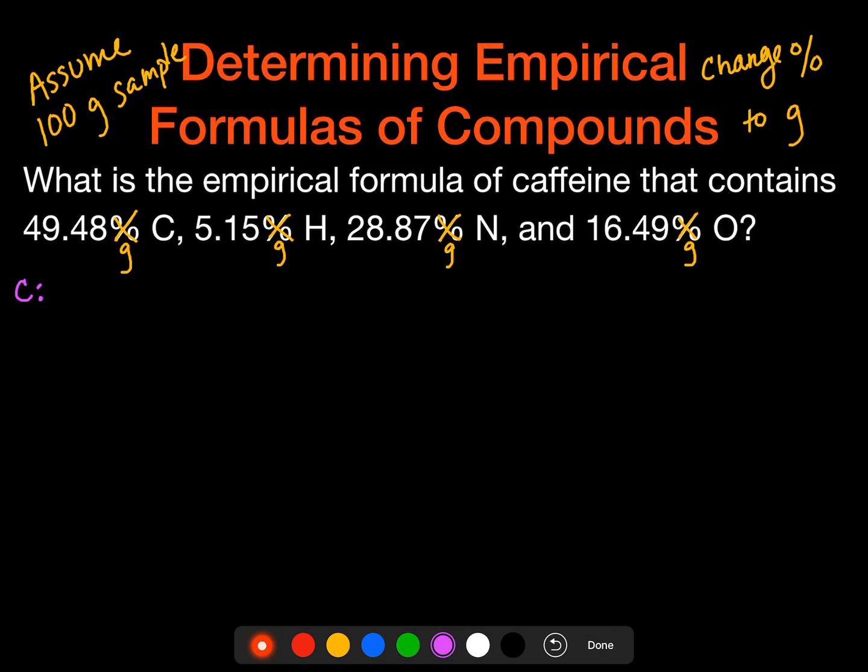So now what I'm going to do is for each one of these, I'm going to start with carbon. I'm going to take the mass up here, the 49.48 grams. I'm going to divide that by the molar mass of carbon, which is 12.01 grams per mole. And that gives me 4.1199 moles, because I'm left with moles. So I do that for all of my elements.